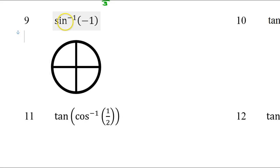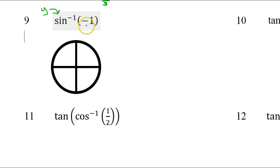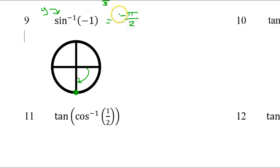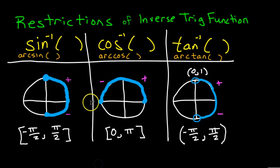Inverse sine is just an angle — it's the angle whose sine is negative 1. Remembering that sine is a y value on the unit circle, where is the y value going to be negative 1? The y value is negative 1 at the bottom of the circle — this is going to be called negative pi over 2. Can't call it 3 pi over 2 — that would take me around into the undefined zone. Have to go this way, staying in the defined range the entire time.